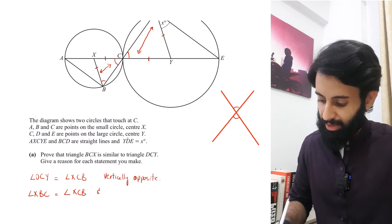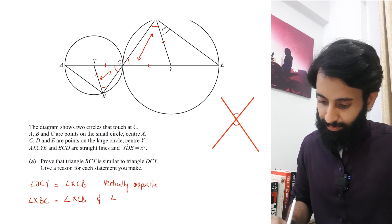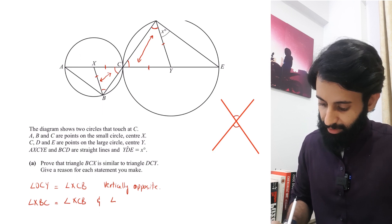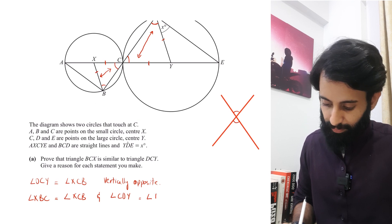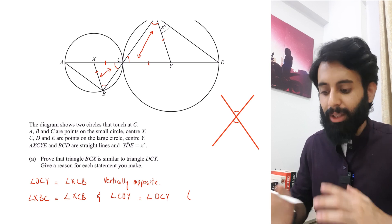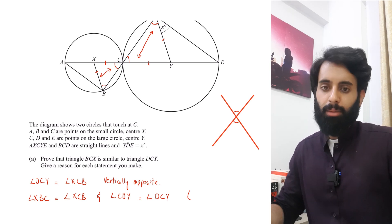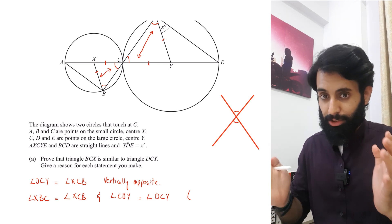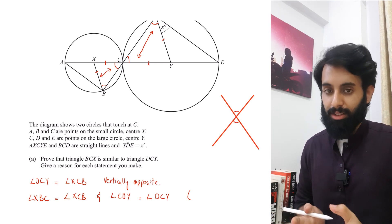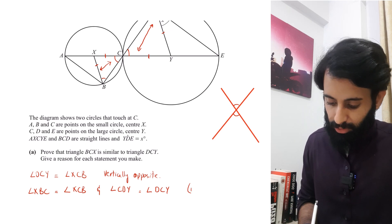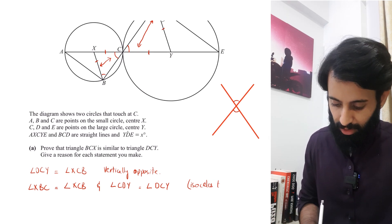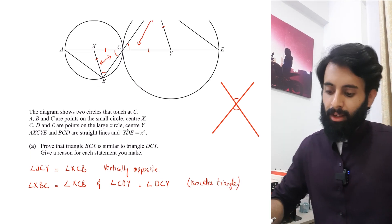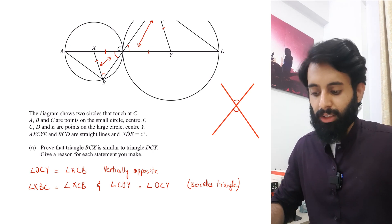Similarly, angle CDY equals angle DCY in the larger triangle, again because it's an isosceles triangle. Make sure you write this reasoning down — the only way to communicate with the examiner is through your written solution.